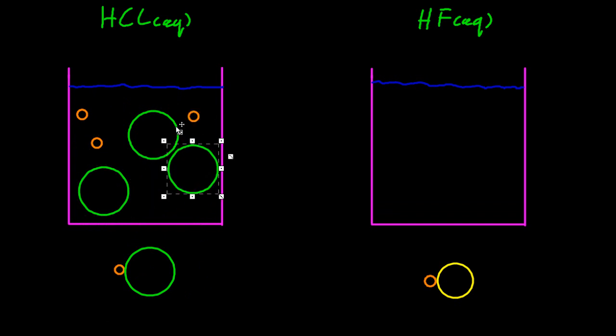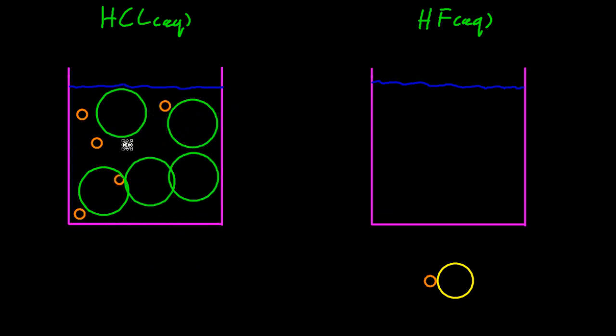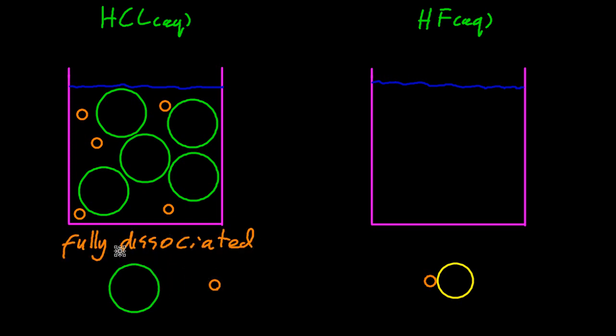So hydrochloric acid on the left is a strong acid, which means it's fully dissociated in solution, and so every single proton comes off of every single HCl molecule, fully dissociated. On the right-hand side is hydrofluoric acid.